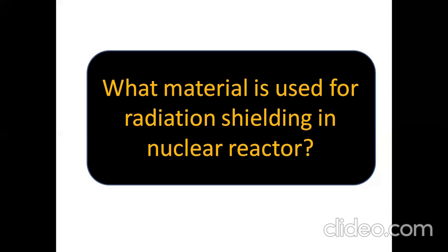The second material used for radiation shielding is concrete, with a density of 2.4 grams per centimeter cube. It is less efficient than lead but very easily available. The third material is steel, with a density of 7.8 grams per centimeter cube. Steel is not an efficient shielding material but has good structural properties and is sometimes used as an attenuating shield.